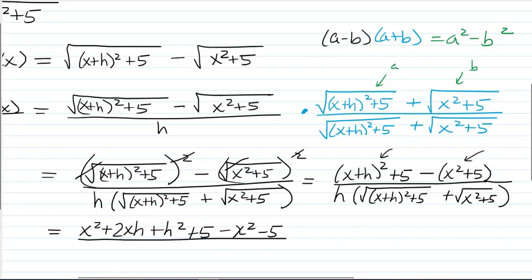And this is all over h times the square root of x plus h squared plus 5 plus the square root of x squared plus 5.